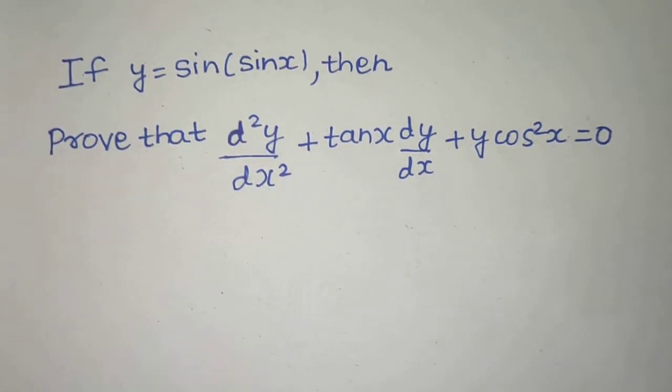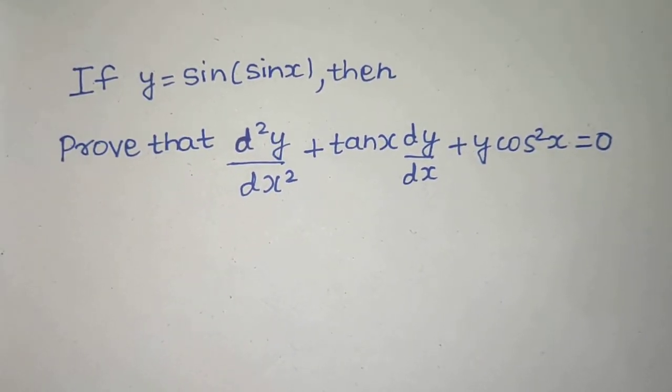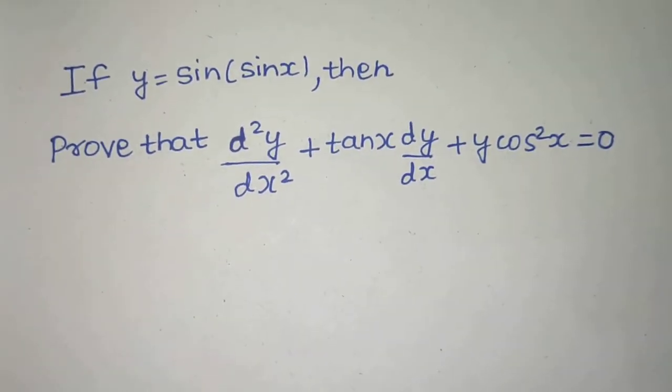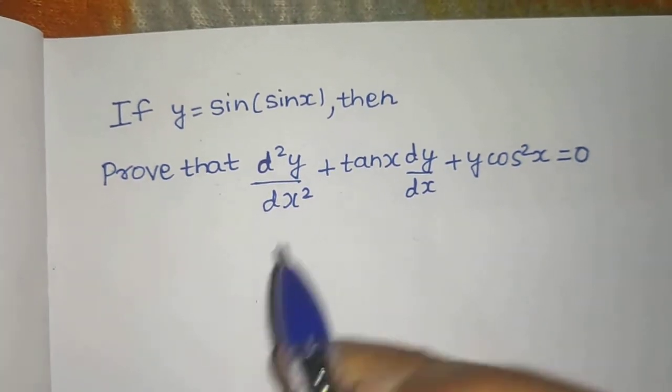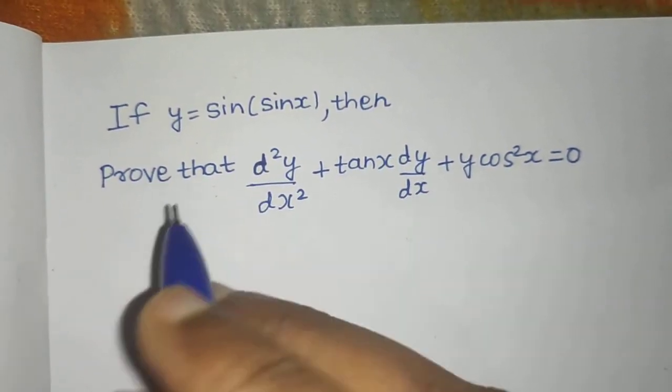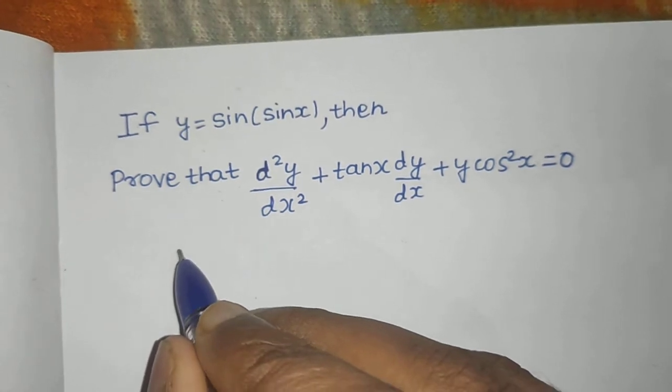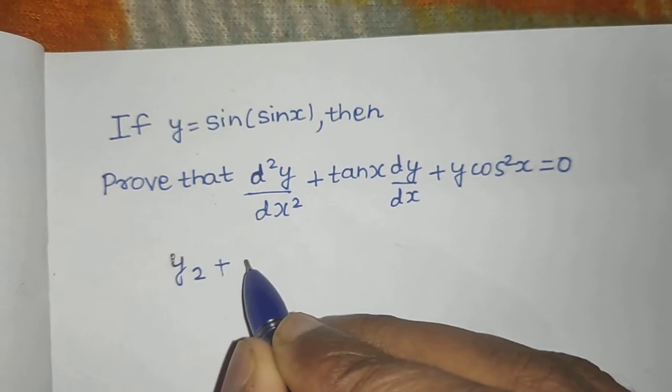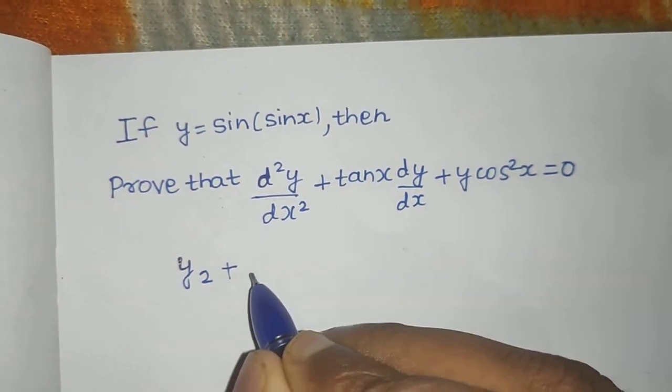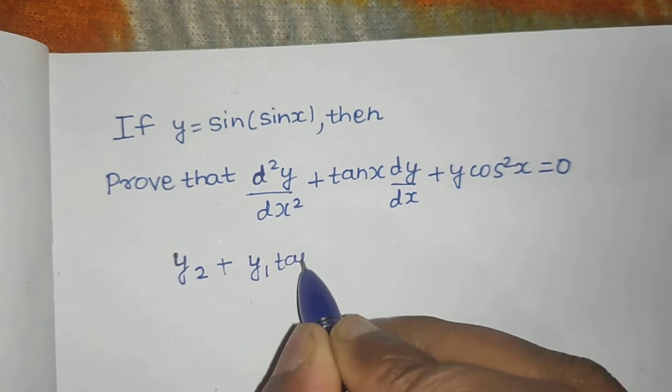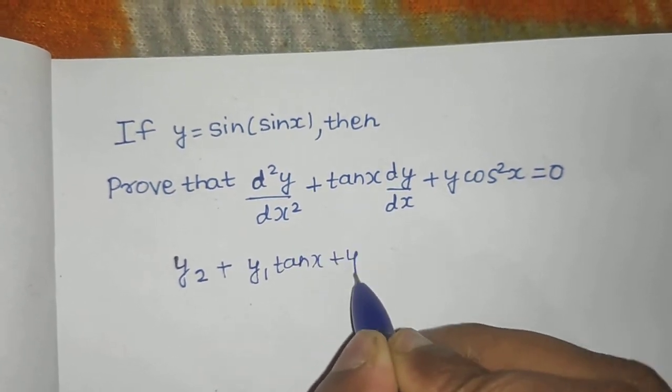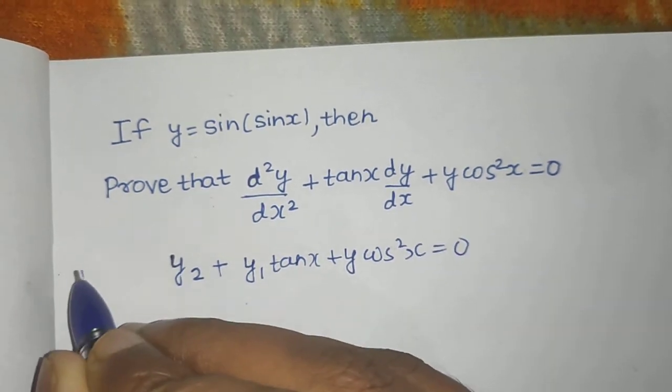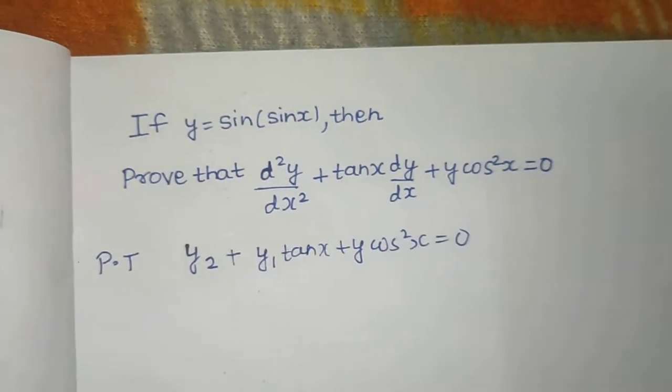Here's a question from Leibniz theorem. If y equals sine of sine x, then we need to prove this equation. You can also write this in a familiar fashion as y2 plus y1 times tan x plus y cos square x equals to 0. So we need to prove basically this thing.